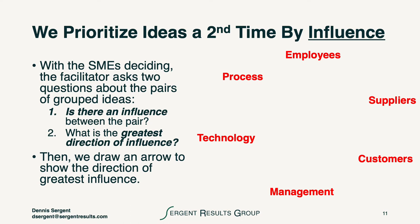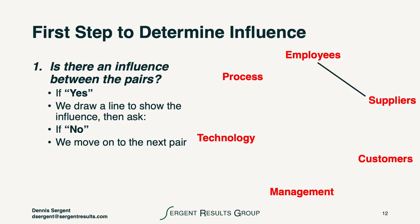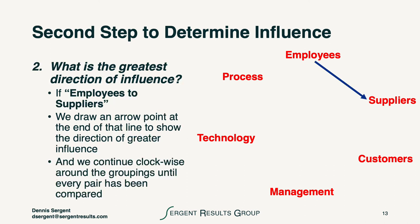With the subject matter experts deciding, a facilitator will ask two questions about the pairs of grouped ideas. First, is there an influence between the pair? And second, what is the greatest direction of influence? Then we draw an arrow to show the direction of greatest influence. For example, the answer to the first question may be yes — there is an influence between employees and suppliers. We then talk about the directionality: if employees to suppliers is the greatest influence, we draw an arrowhead to show that direction.